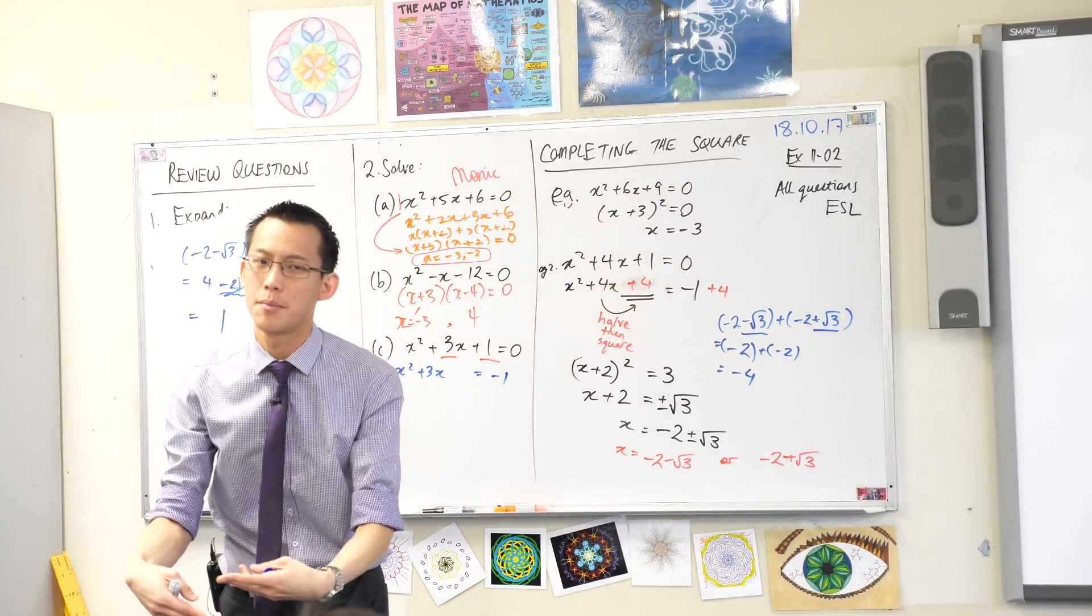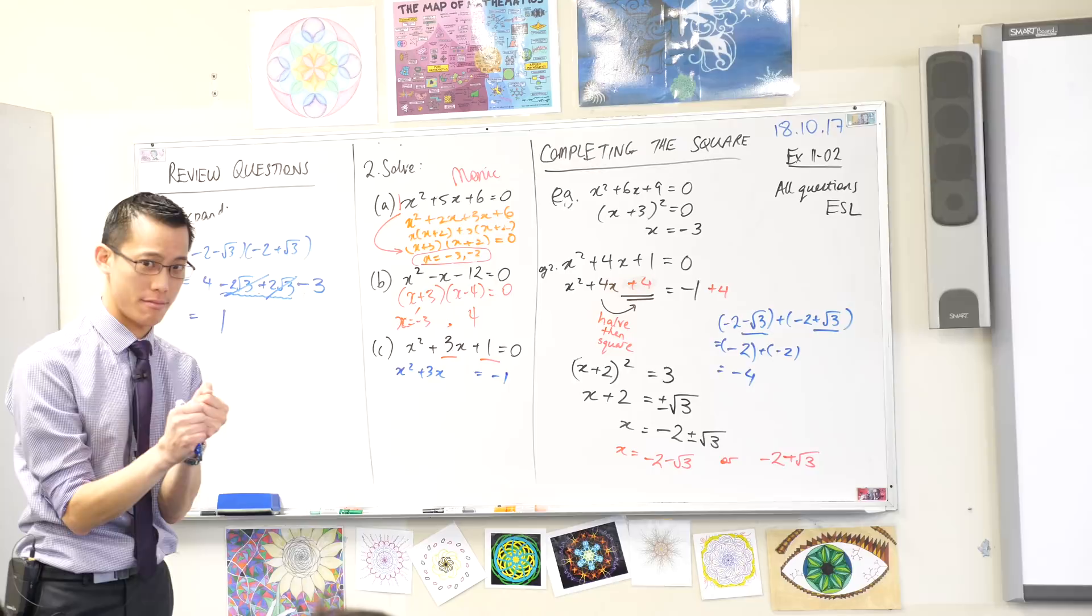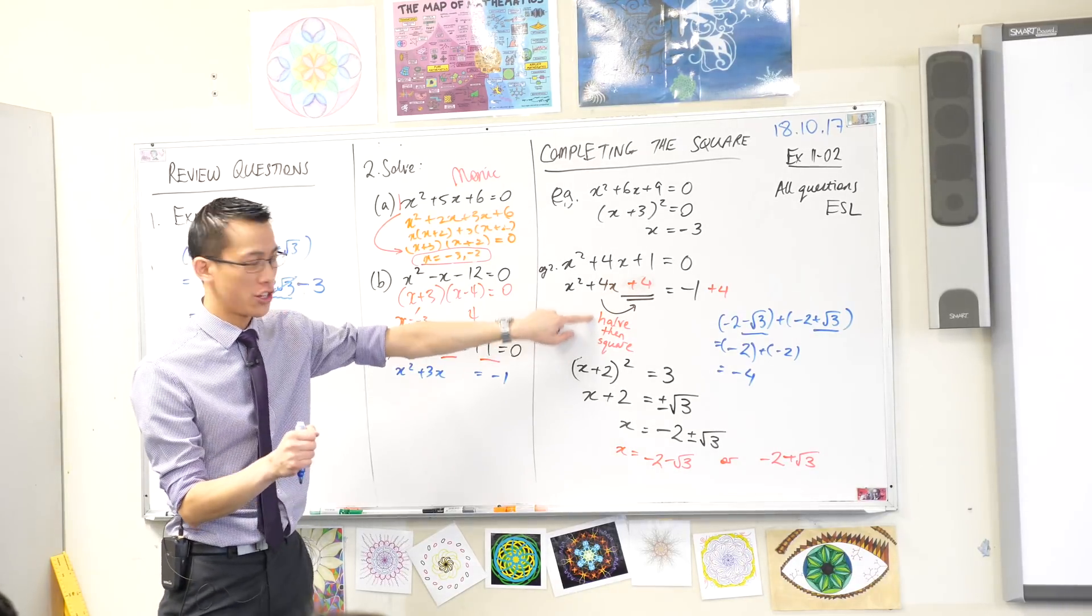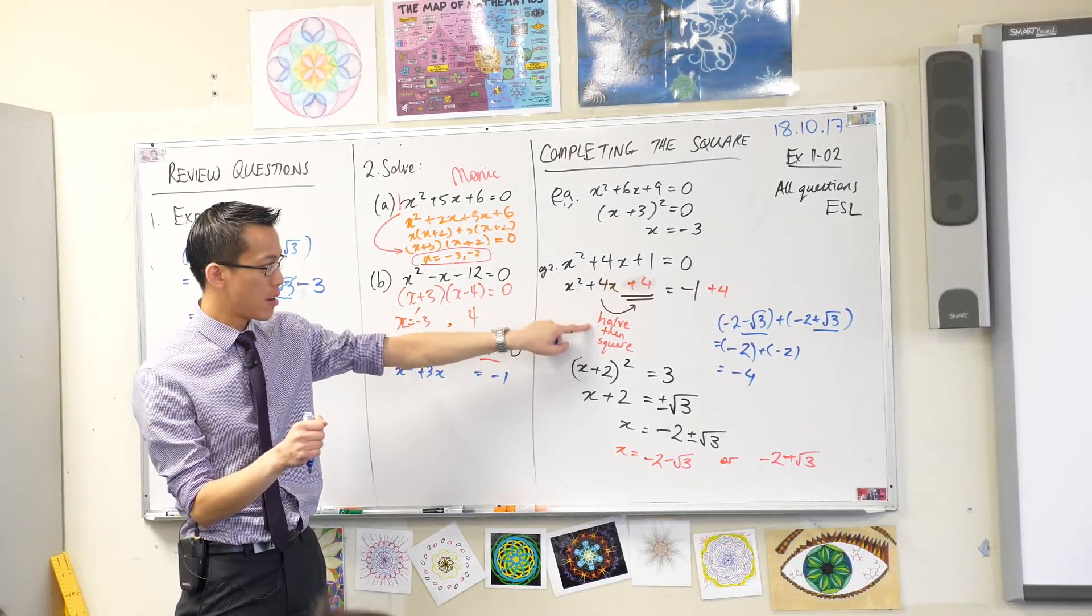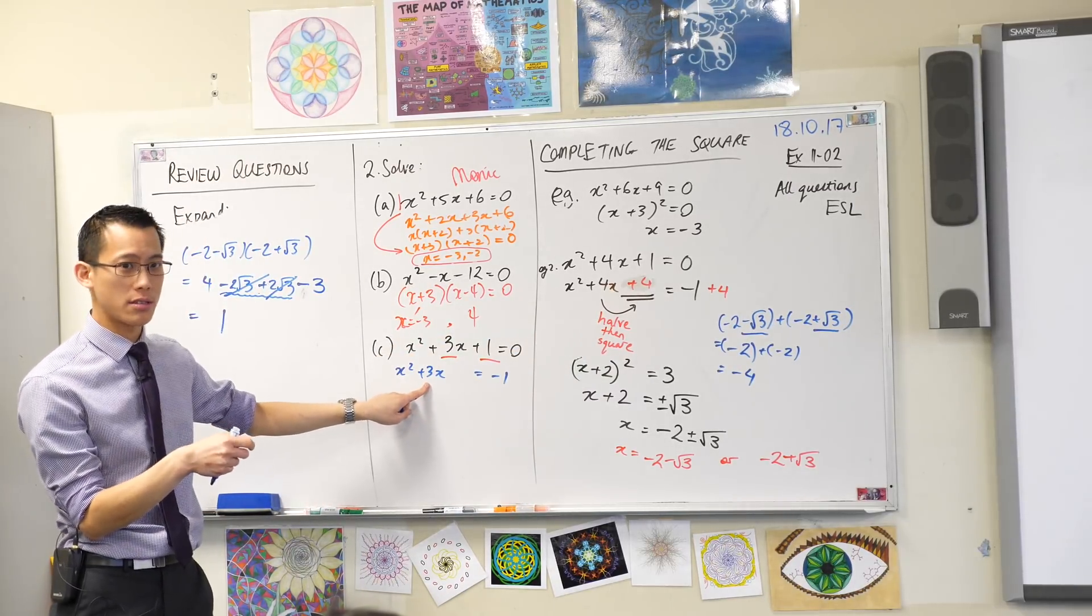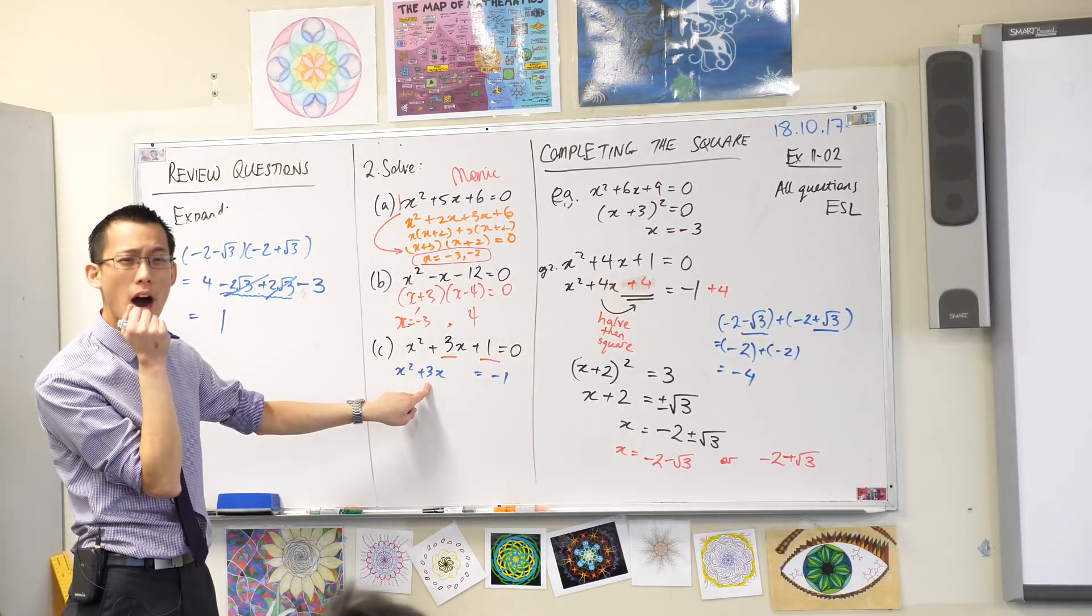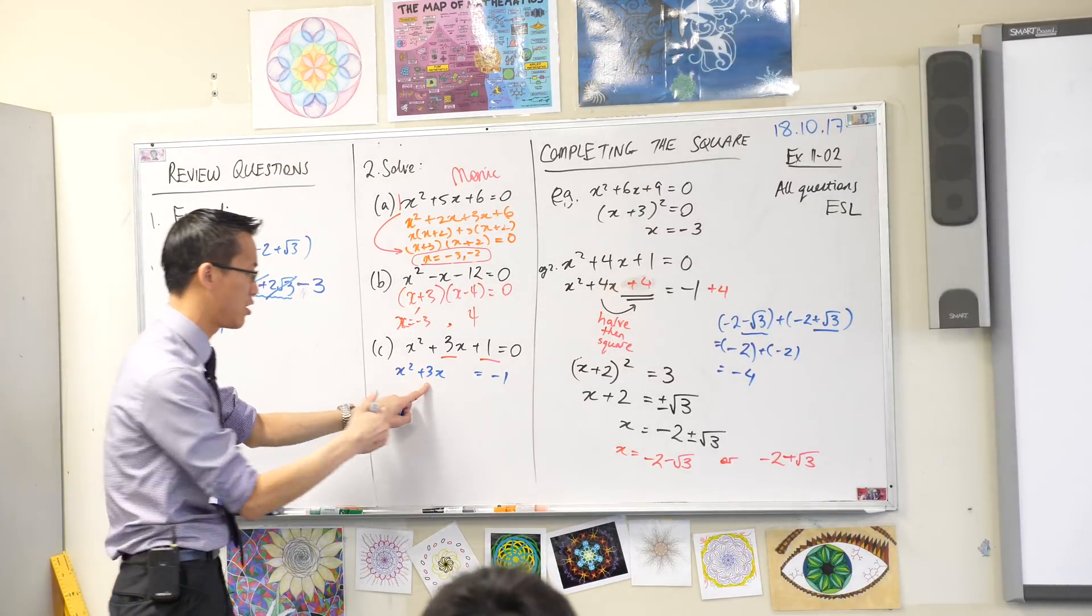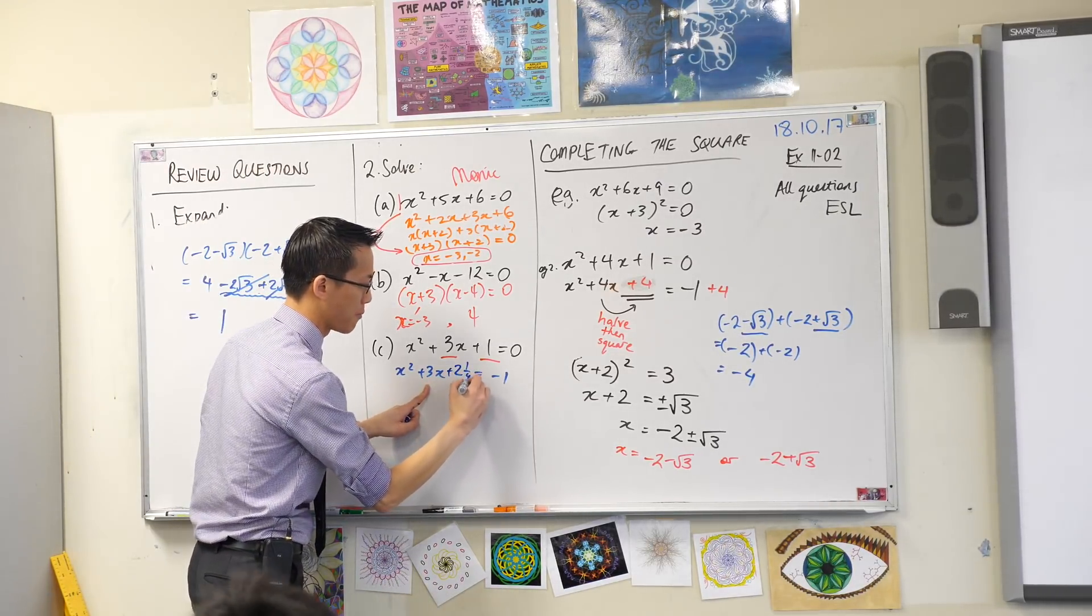But then I did that step after which this whole process is named. I completed the square by adding something. What did I add? You got to do this process. I've got to half and then square. So what's half of this? One and a half. If you square that, your calculator should tell you that's 2.25.